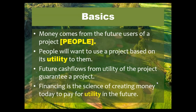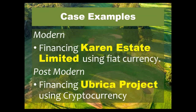We started by talking about the basics of money. We said that money comes from people — the future users of a project. If you're a project sponsor, you have to think about people first, or the users. People will want to use a project based on its utility to them, and future cash flows from utility of the project guarantee that project. So financing is a science of creating money today to pay for utility in the future. We gave examples: one for modern project financing using fiat currency — financing real estate limited — and then a post-modern project financing using the UBRICA project, the example of cryptocurrency.